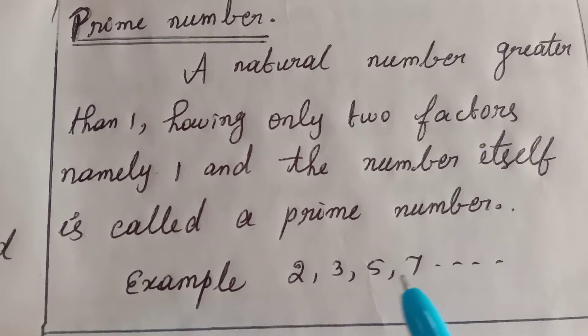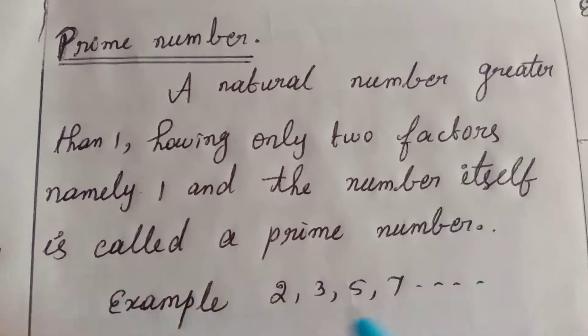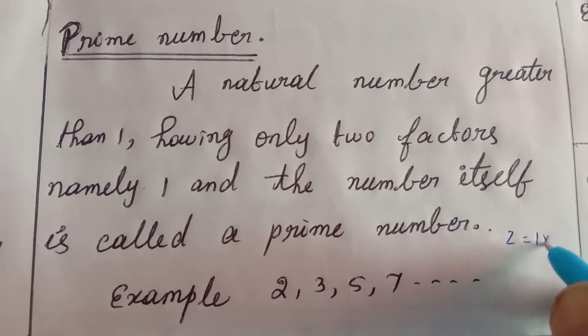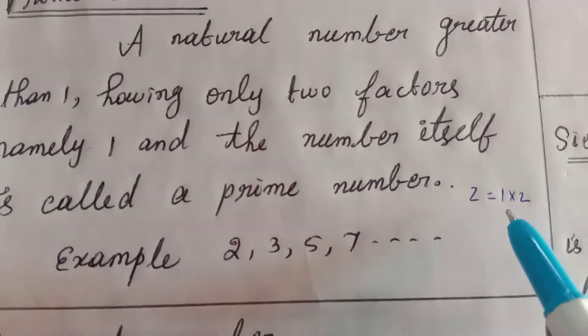Example: 2, 3, 5, 7. How to write 2? 2 is equal to 1 into 2. There is no another way.